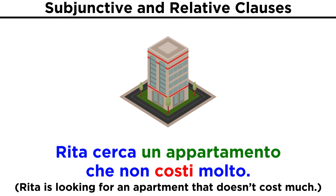Is she going to find it? We don't know — maybe she won't be able to afford anything in this area. The subjunctive mood is required to express the uncertainty of this possibility.